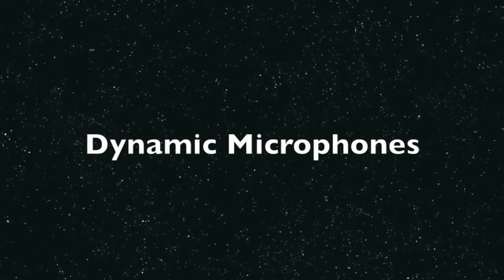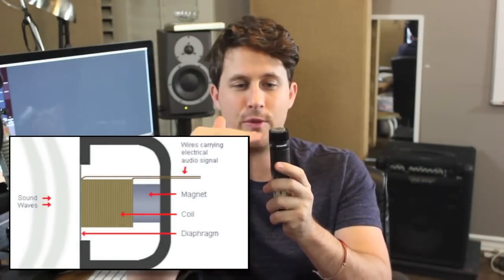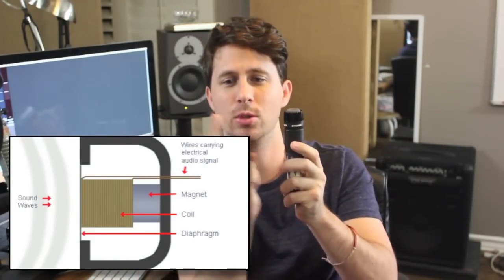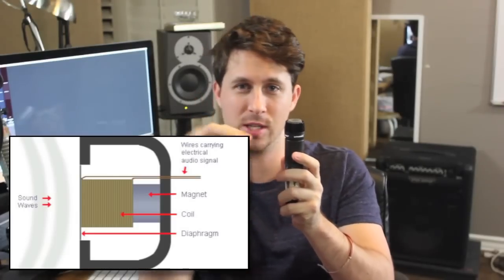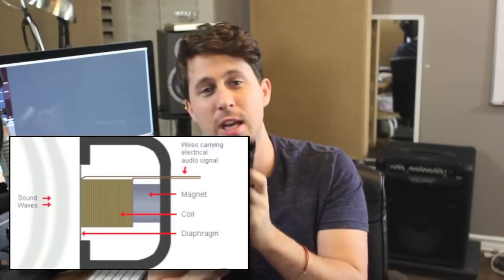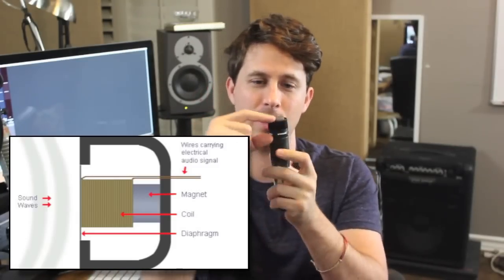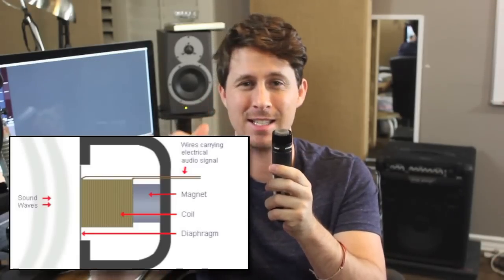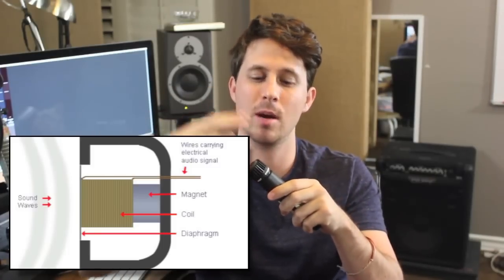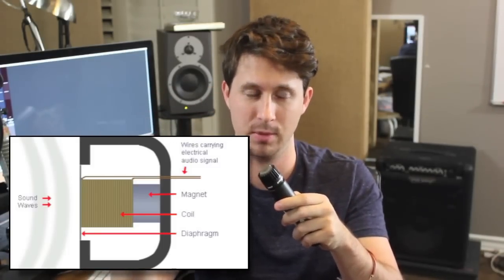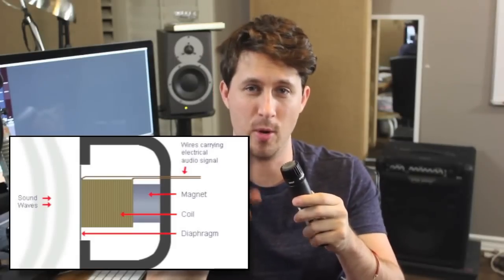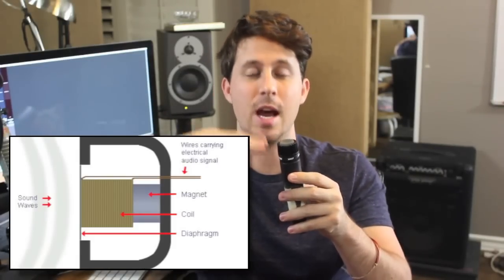We have a diaphragm, and let's talk about dynamic microphones now. This is a Shure SM57 — the workhorse of every single recording studio. In this little head, there is the diaphragm. Attached to the diaphragm is a little coiled wire. That coiled wire is suspended in a magnetic field, and the magnetic field is generated by a magnet inside the head of this microphone. As the diaphragm moves because incoming sound waves are knocking it — and I might say 'diagram' in this video, but I mean diaphragm — as the diaphragm moves, the coil moves as well.